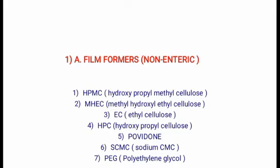The fifth one is Povidone. The degree of polymerization decides the molecular weight of the material. Based on viscosity, it is available in different grades. It is a synthetic polymer consisting of linear 1-vinyl-2-pyrrolidone groups. It gives clear glossy films when dry, but gives tacky films which can be overcome by plasticizers or other polymers.